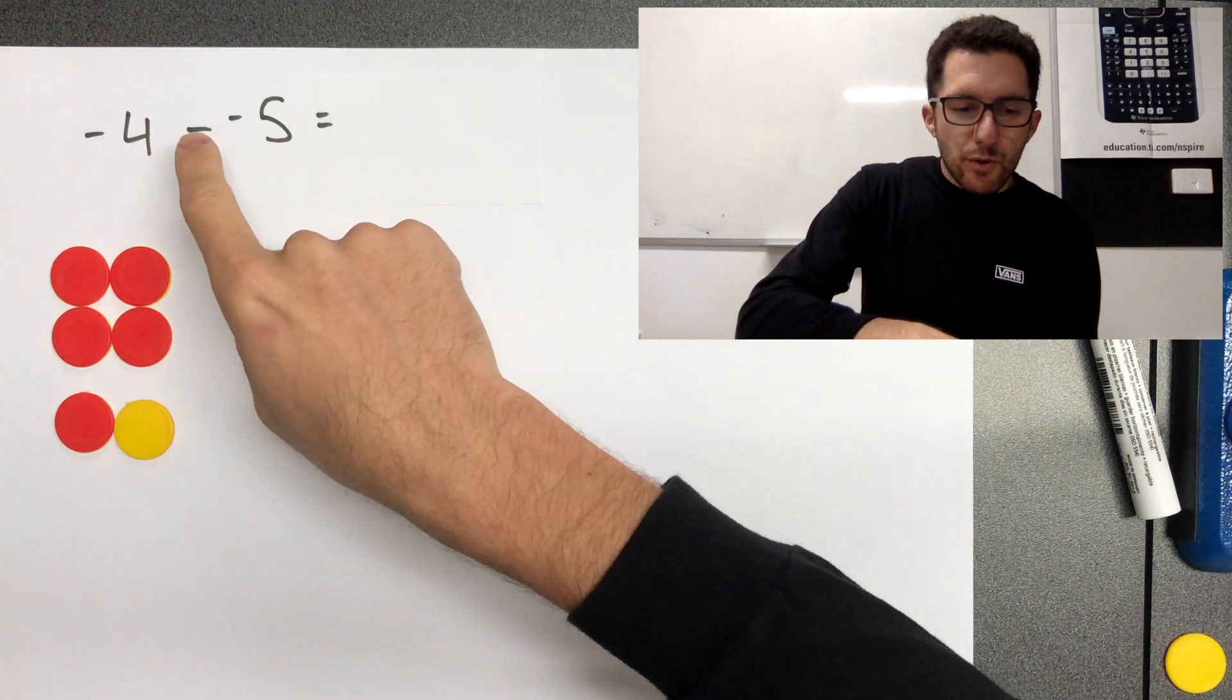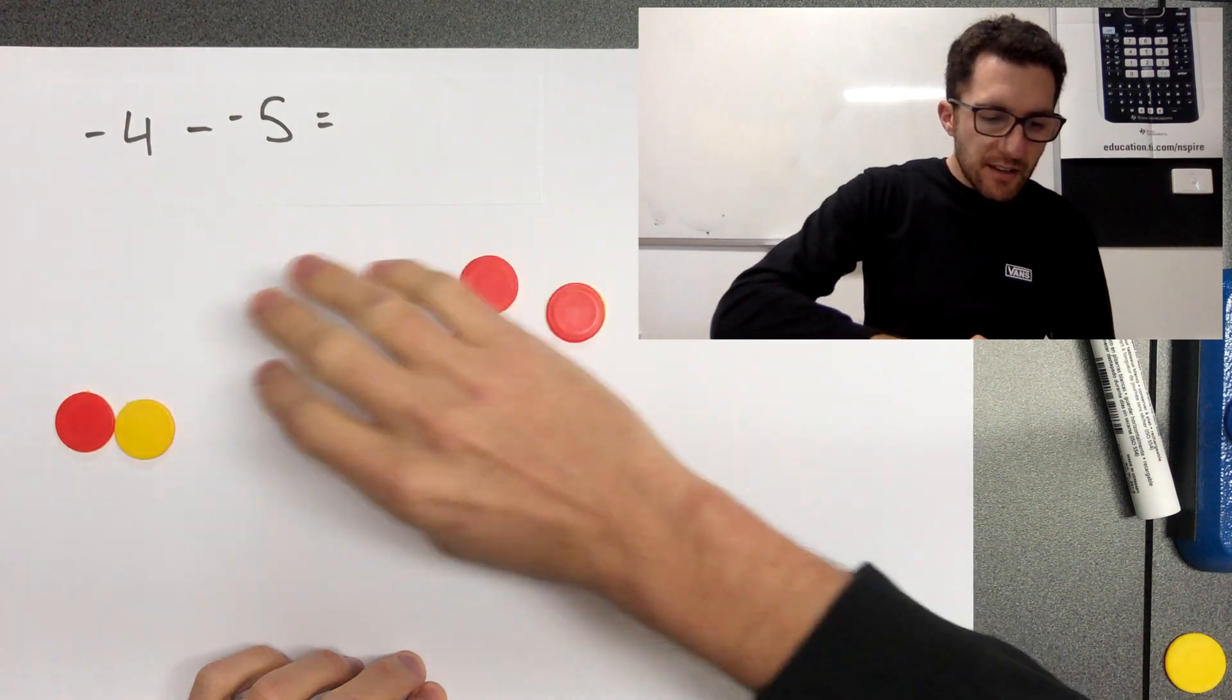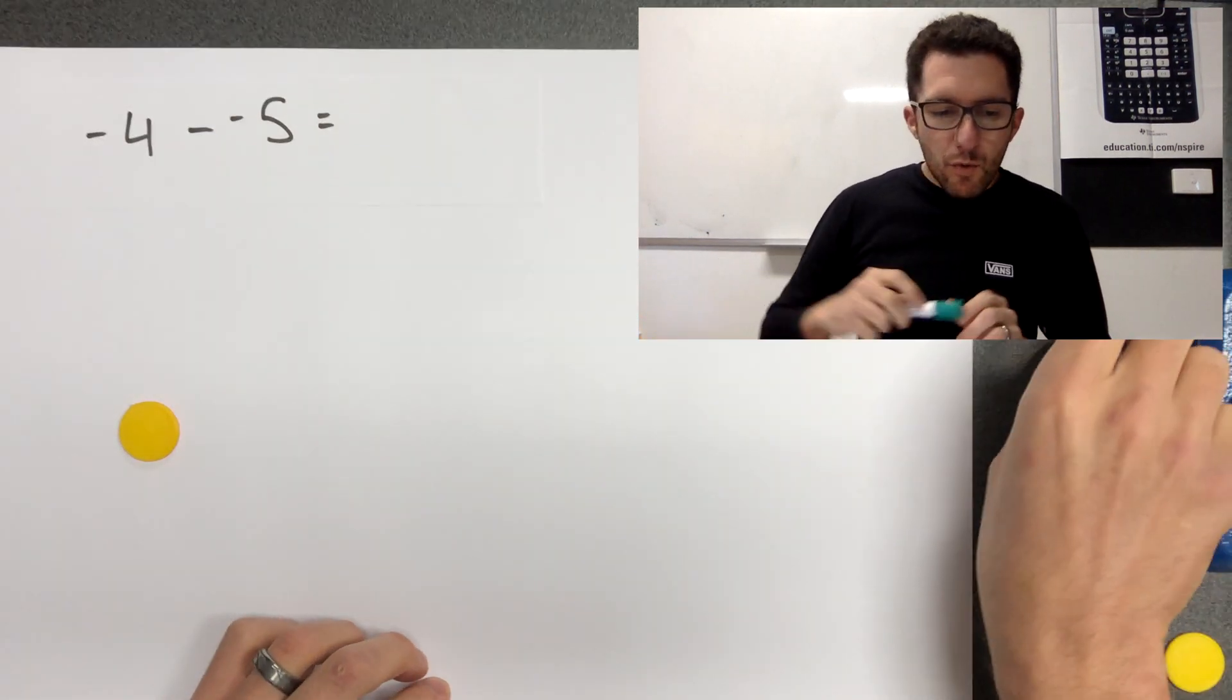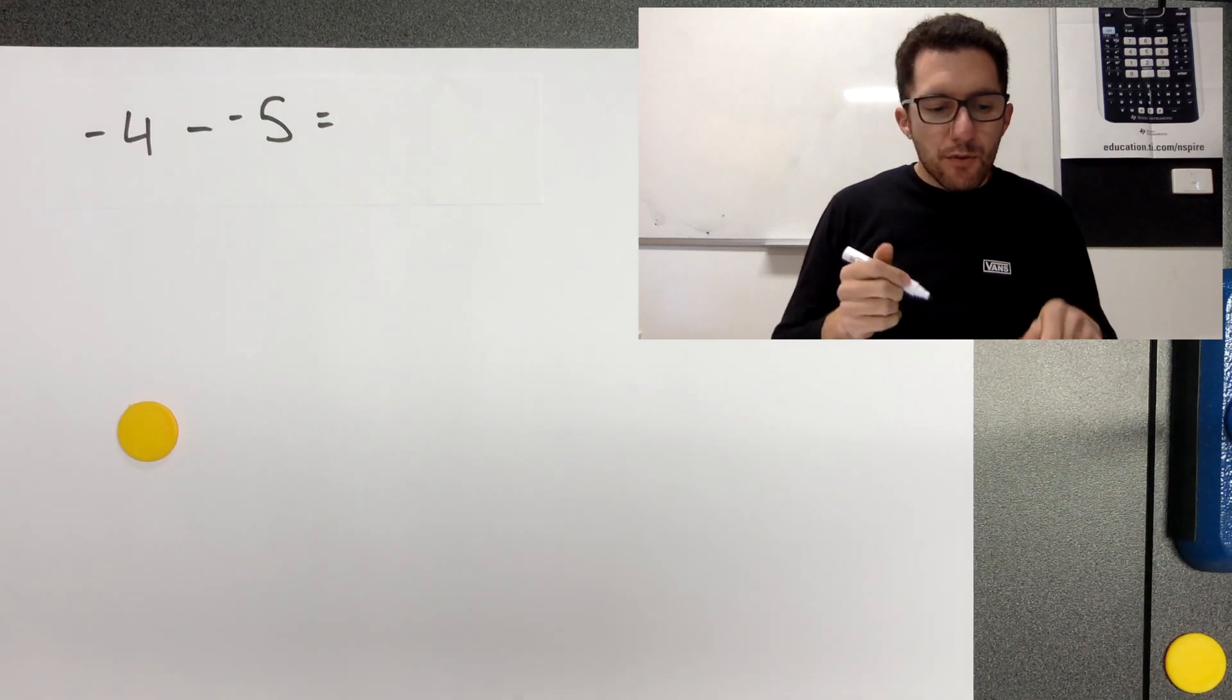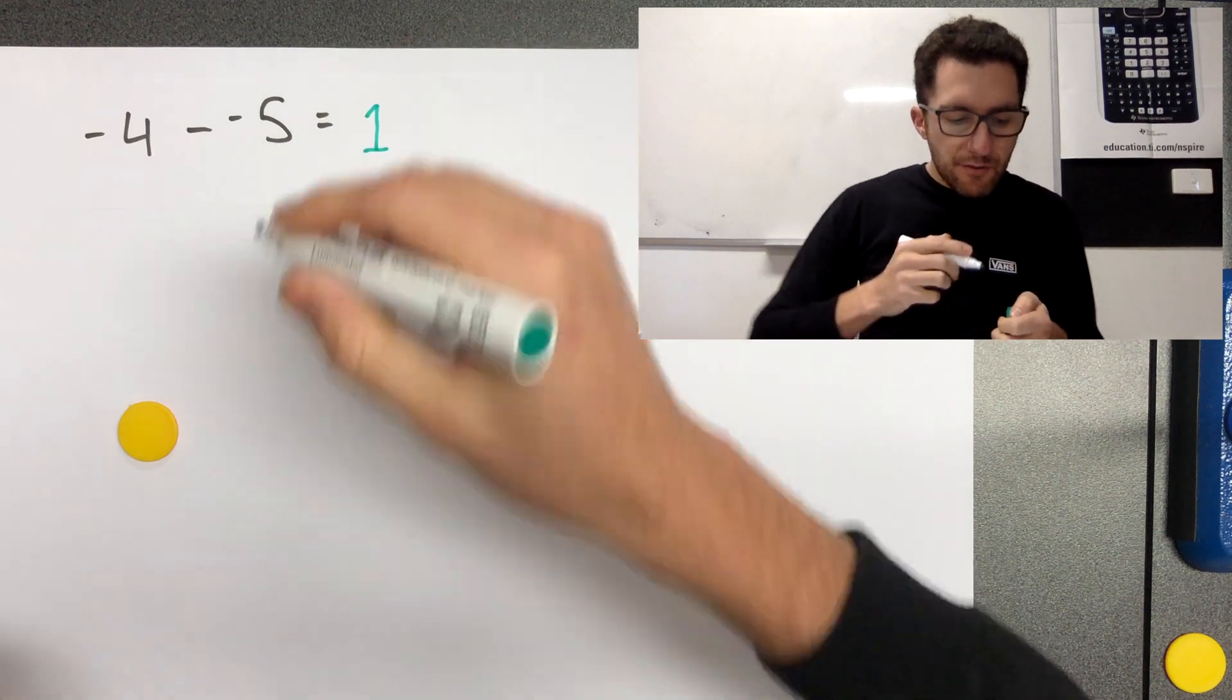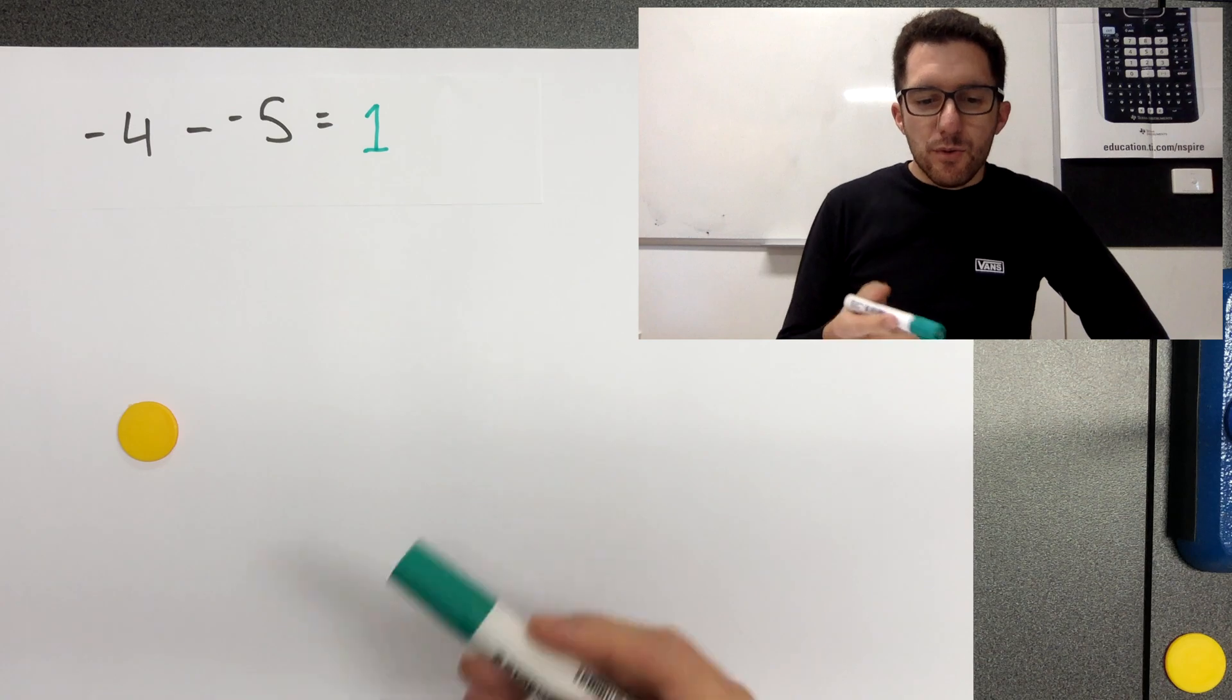Now we're going to subtract, so take away five negatives. So we're going to take these five away. And what are we left with? We've got one positive. So negative four subtract negative five equals one.